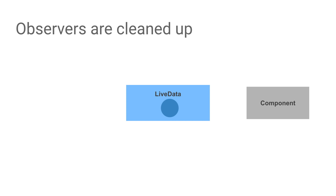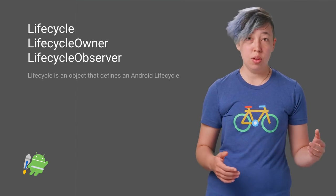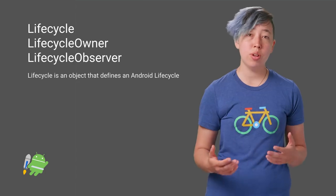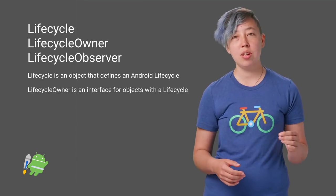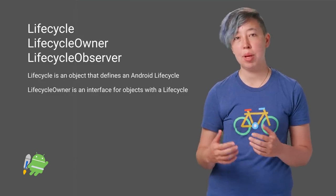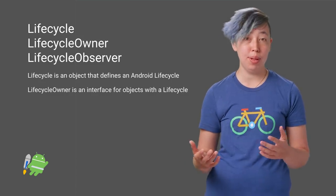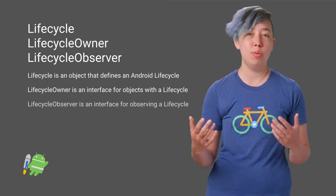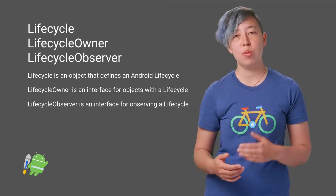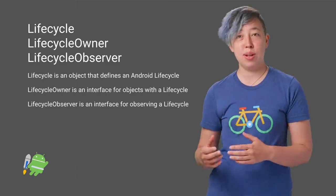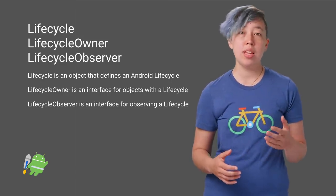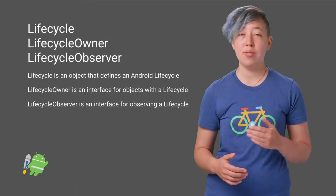This is possible in part because of interfaces and classes in the Lifecycle Library that are also used by framework classes. These classes are: Lifecycle, which is an object that represents an Android lifecycle and what state it's in; LifecycleOwner, which is an interface for objects that have a lifecycle, like AppCompatActivity or a fragment; and LifecycleObserver, which is an interface for observing a lifecycle. LiveData is a lifecycle observer — it abstracts away the need for you to deal directly with the activity or fragment lifecycle.